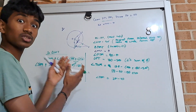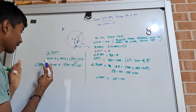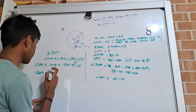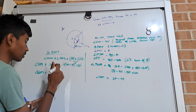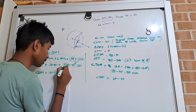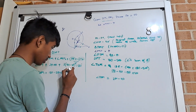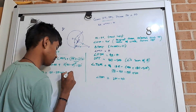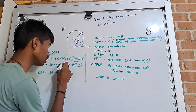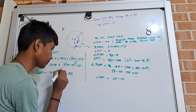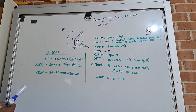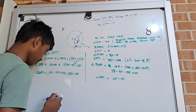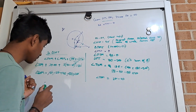That must equal 180 because of the angle sum of triangles. Let's make angle SOM the subject: angle SOM equals 180 minus 180 minus 2 theta plus 90 minus 180 minus 2 theta. Simplifying: 180 minus 180 cancels out, and 2 theta minus 2 theta cancels out, and we're left with just 90.